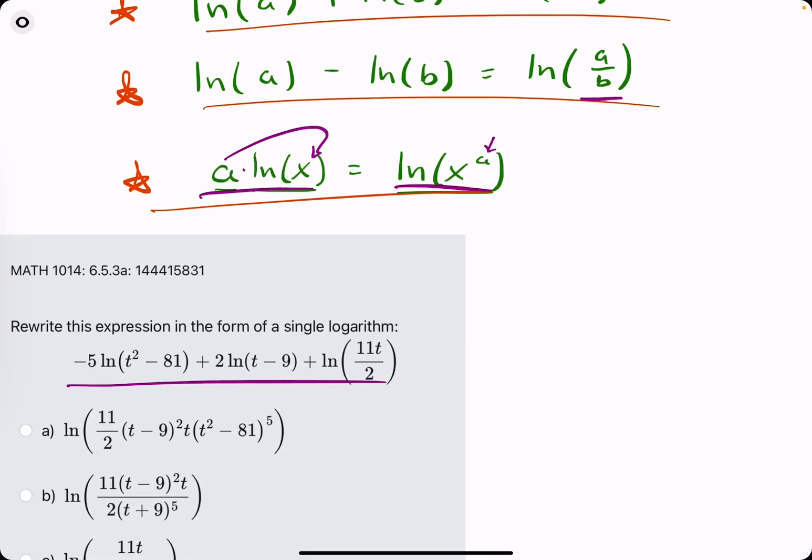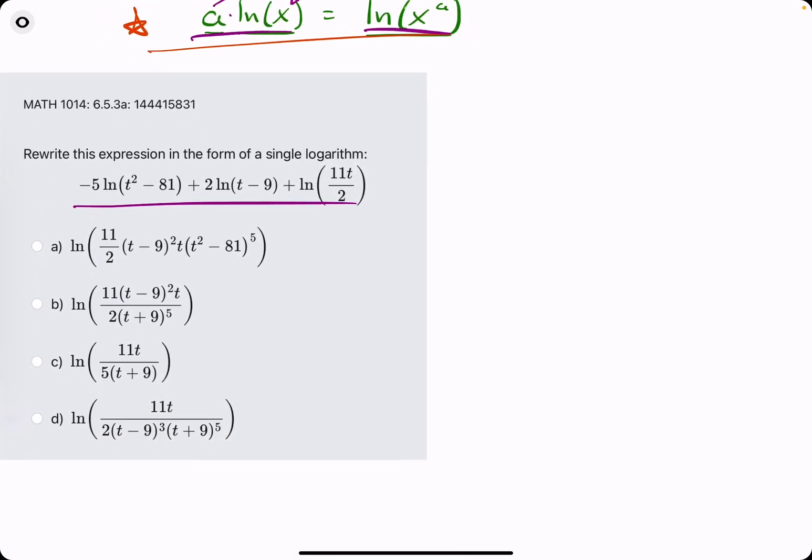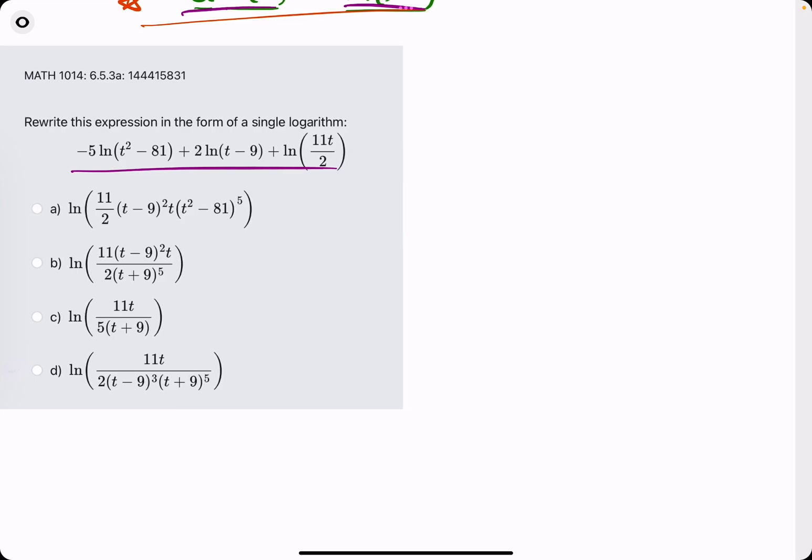We're actually going to use that property first in this problem. Our first step is any number you see out in front, we're going to bring it up as the exponent of whatever's inside the natural log. And when we do so, with this first term, we're always going to leave that negative on the outside. I have a little shortcut way of going about this problem, so leaving that negative on the outside is essential.